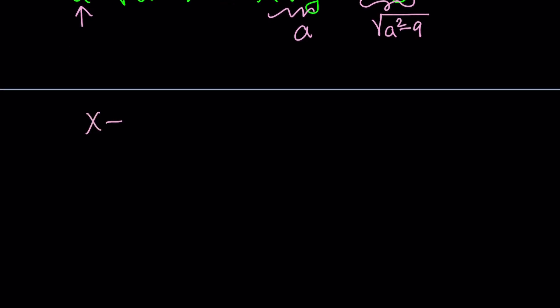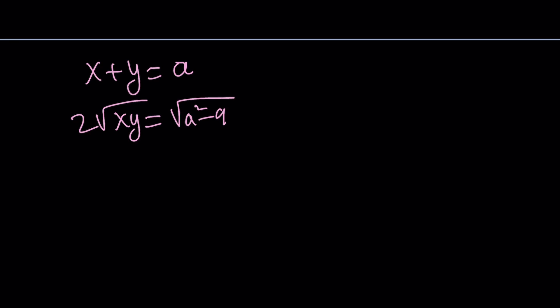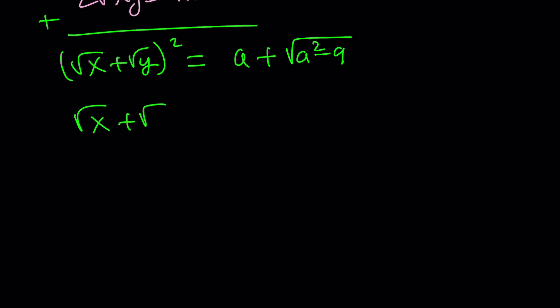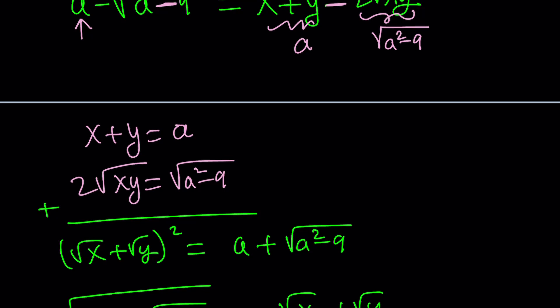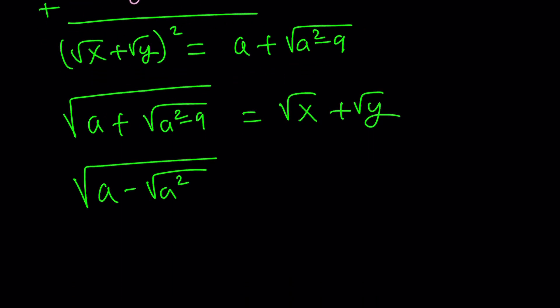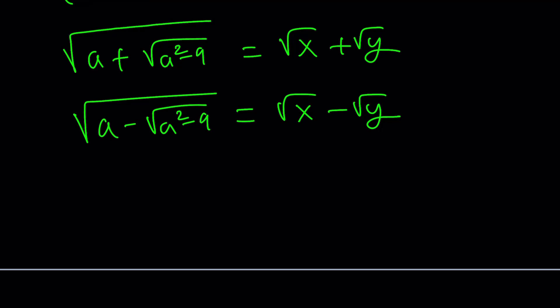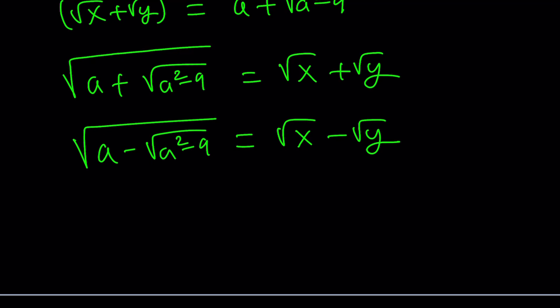And this needs to be square root of a squared minus nine. Notice that they both have a minus sign. So I totally ignored it. From here, we get a system of equations. X plus y equals a and two root xy equals square root of a squared minus nine. Obviously, there's a couple different ways to go about it. Maybe one way I'm thinking about is you can go ahead and add these equations up.